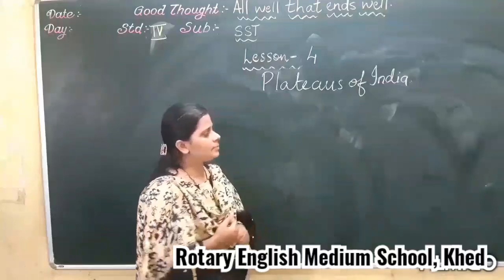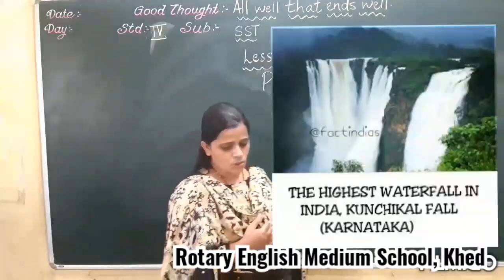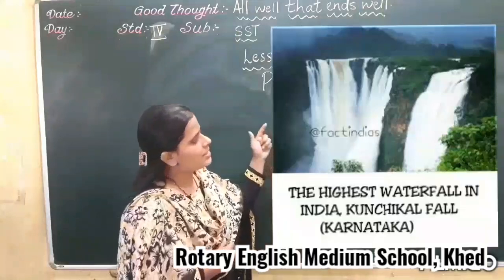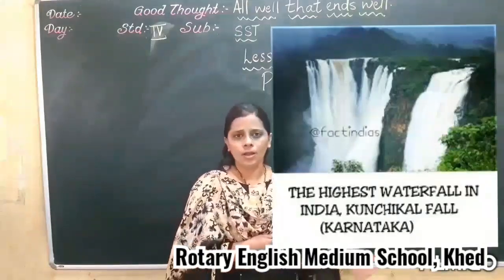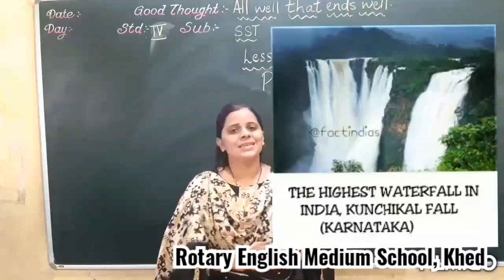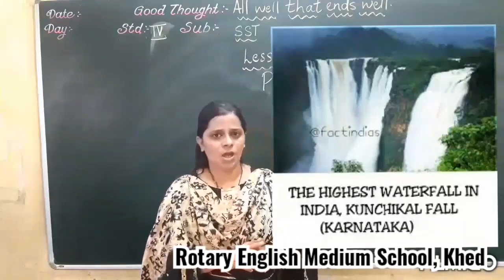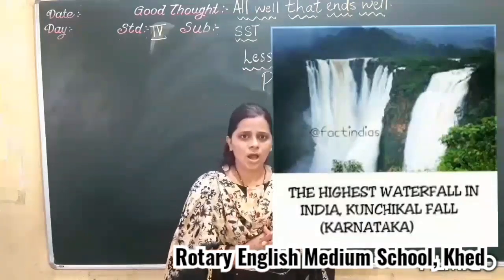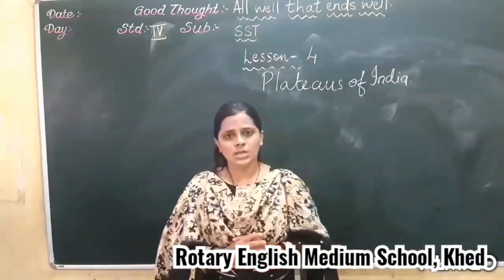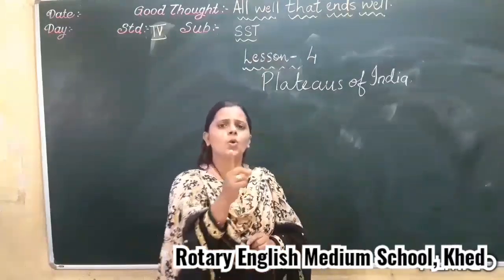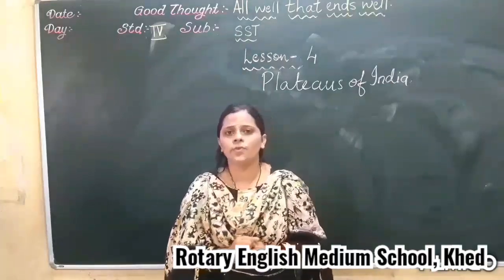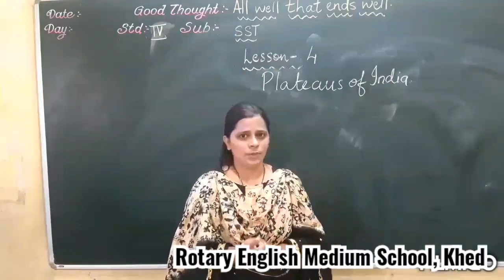The second waterfall is Kunchikal Falls, which is also a very high waterfall. It is the second highest waterfall in Asia. So here is a task for you — you have to find out which is the first highest waterfall in Asia.